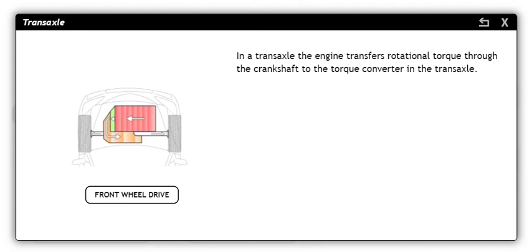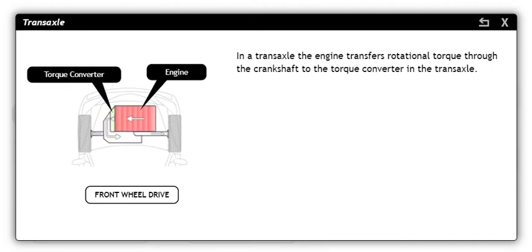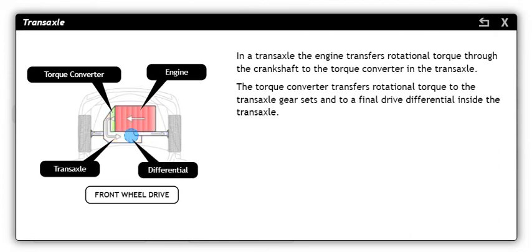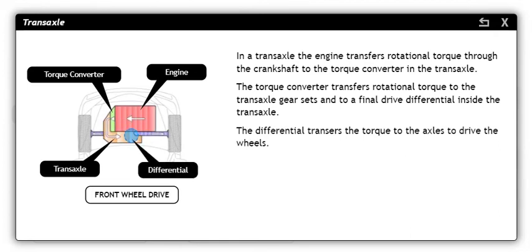In a transaxle, the engine transfers rotational torque through the crankshaft to the torque converter in the transaxle. The torque converter transfers rotational torque to the transaxle gear sets and to a final drive differential inside the transaxle. The differential transfers the torque to the axles to drive the wheels.